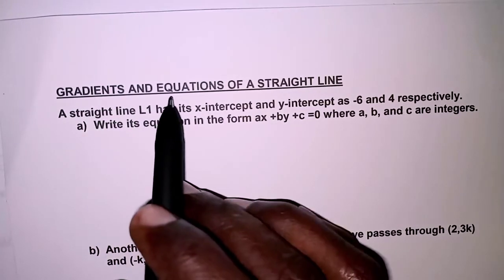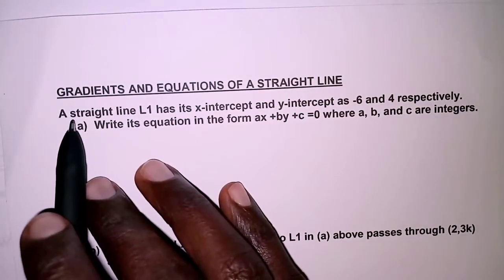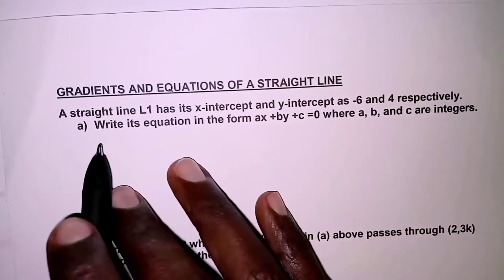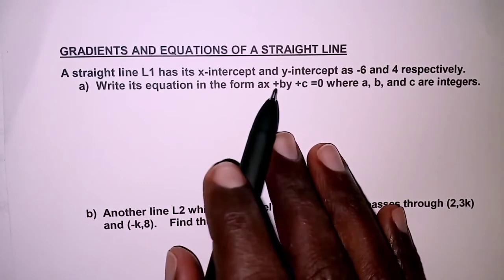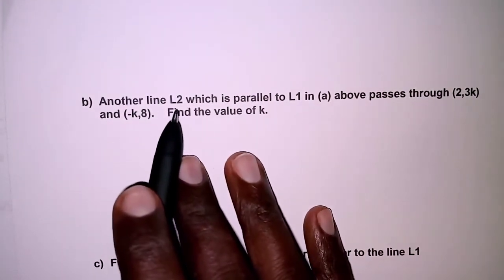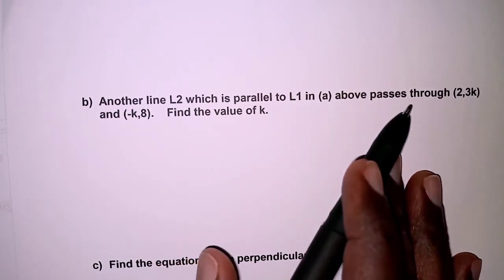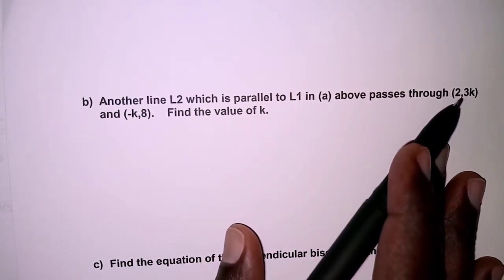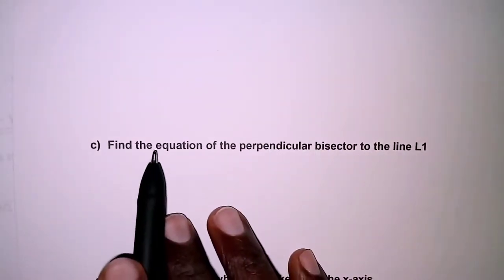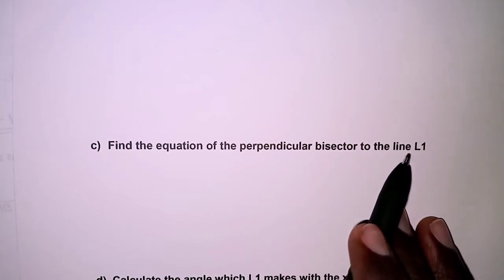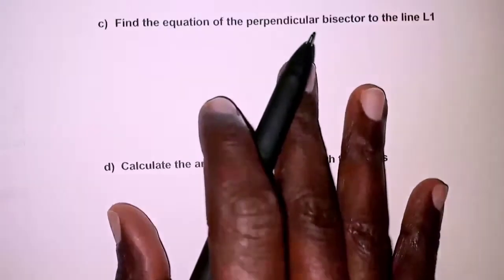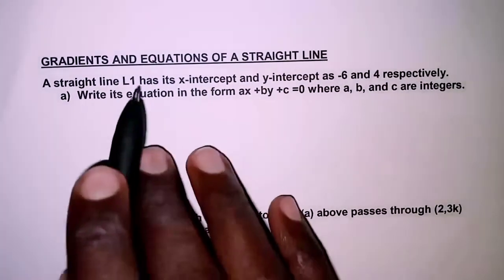The question today is about gradients and equations of a straight line. A straight line L1 has its x-intercept and y-intercept as negative 6 and 4 respectively. Part A: write its equation in the form ax plus By plus C equals zero, where A, B, and C are integers. Part B: another line L2 which is parallel to L1 passes through (2, 3K) and (negative K, 8) — find the value of K. Part C: find the equation of the perpendicular bisector of line L1. Part D: calculate the angle which L1 makes with the x-axis.